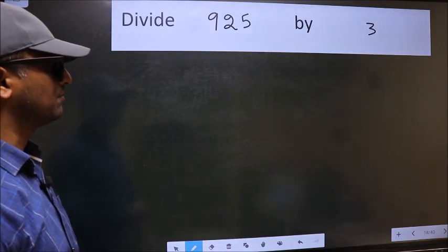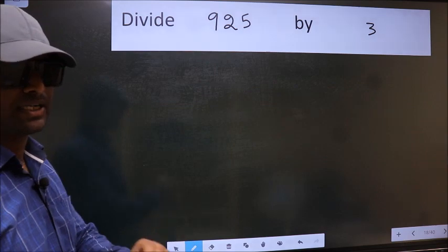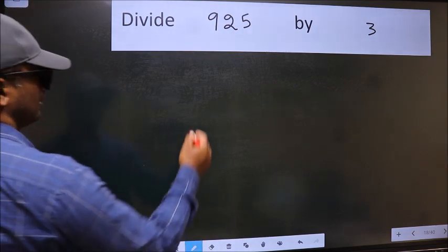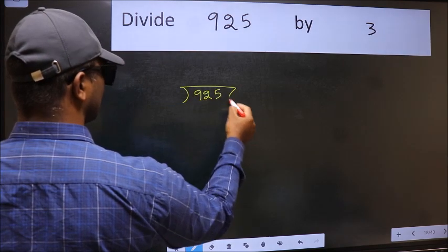Divide 9.25 by 3. To do this division, we should frame it in this way: 9.25 and 3 here.